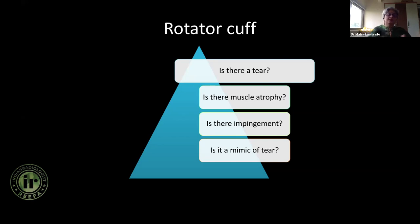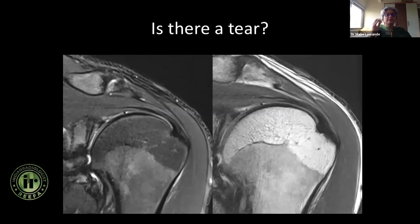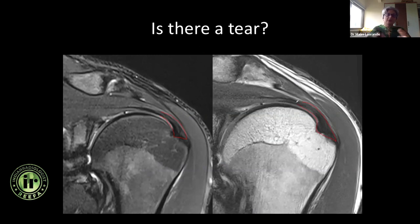MRI can answer more questions. The first question we want to answer is: is there a tear or not? This is how a normal tendon looks on all sequences — it is hypointense. This is because there are no mobile water protons; the hydrogen protons are tightly bound in the collagen fibers, they are not moving around, they are not giving any signal, so it looks dark.